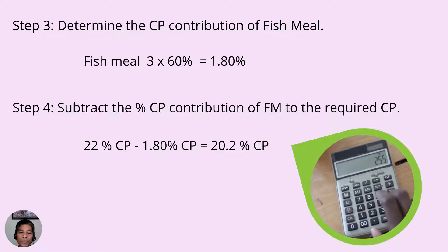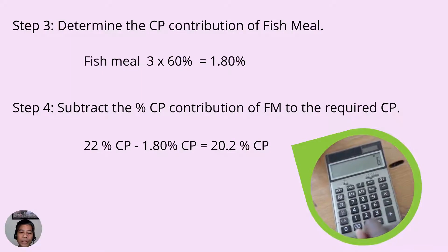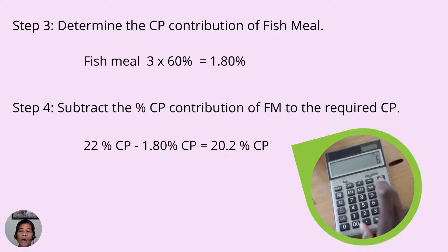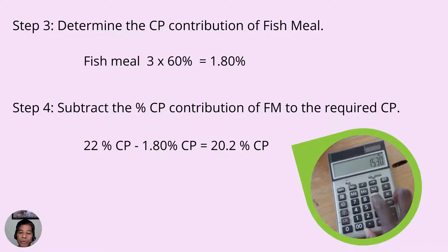So 3% of fish meal with 60% CP content would contribute 1.8% crude protein.